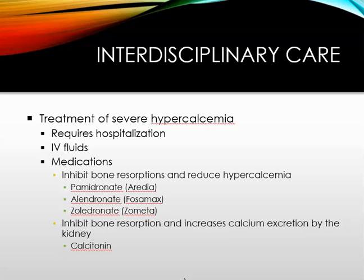This decreases plasma calcium levels and provides relief of bone pain. Calcitonin is the hormone produced by the thyroid gland; it decreases plasma levels of calcium by inhibiting bone reabsorption and increasing calcium excretion by the kidneys. Bone reabsorption is the process by which osteoclasts break down bone and release minerals, resulting in a transfer of calcium from bone to the blood.